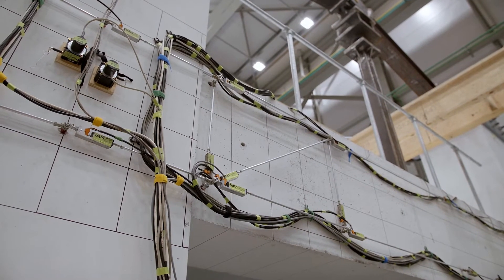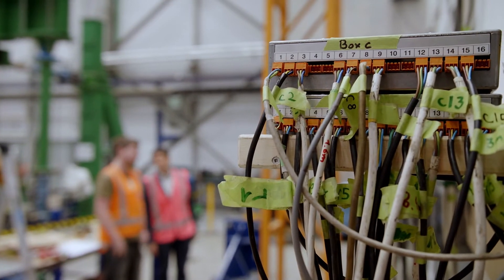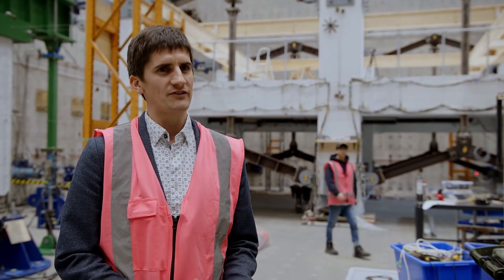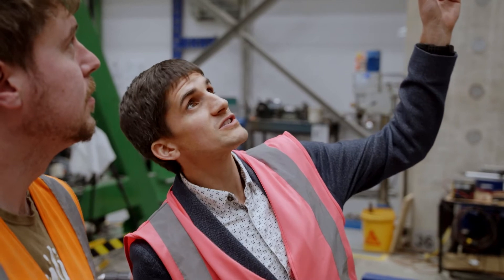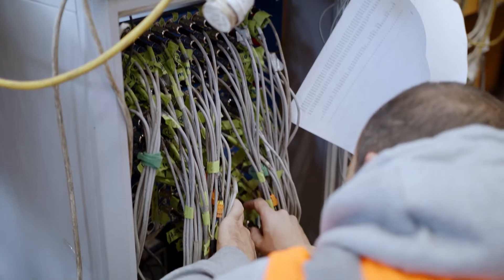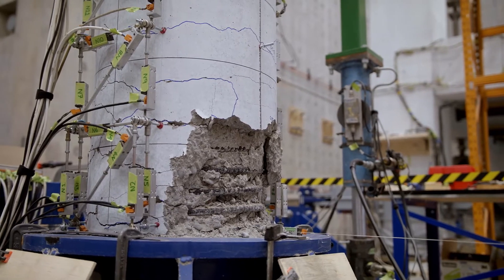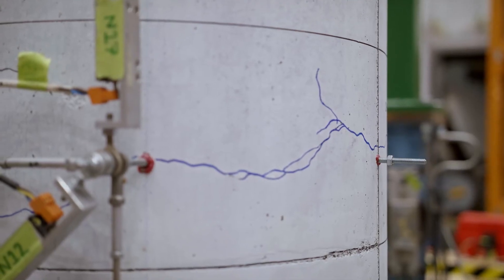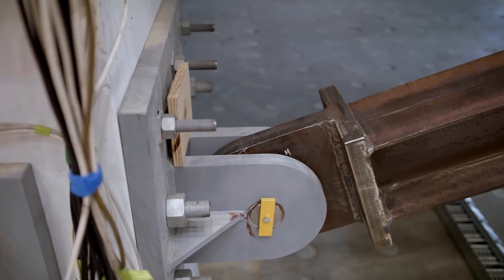We're here at the structural earthquake laboratory at the University of Canterbury, and behind me is a full-scale representation of a typical building from the 80s to 90s era of reinforced concrete construction — the type of structural form found in buildings like Statistics House. We're trying to understand how the deformation of the floors interacts with the beams and columns that support them, to make sure that under large earthquakes those floors don't unseat from the beams and collapse onto the floors below.